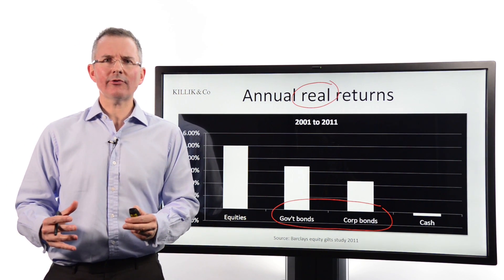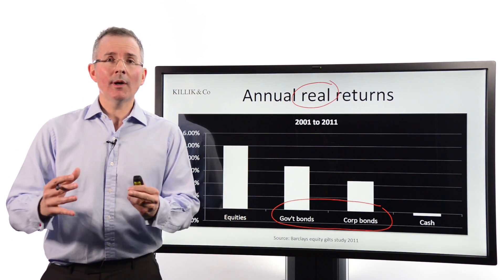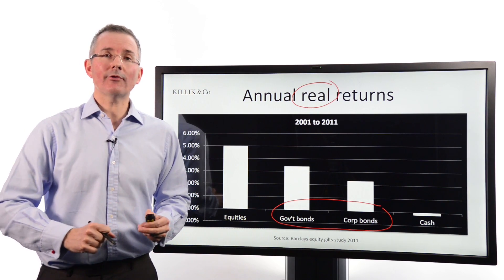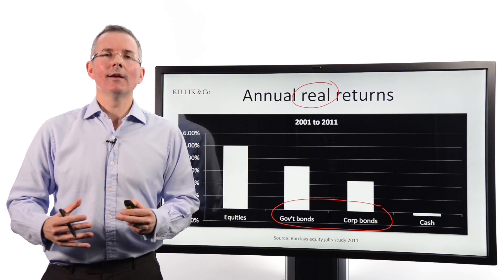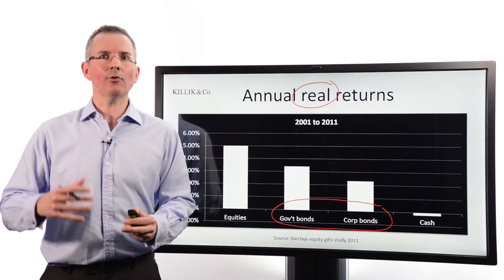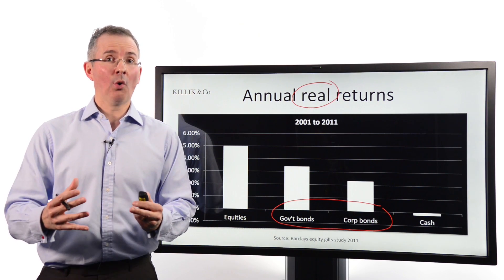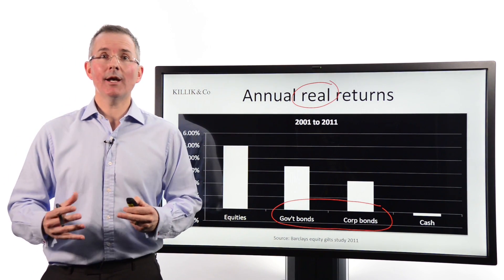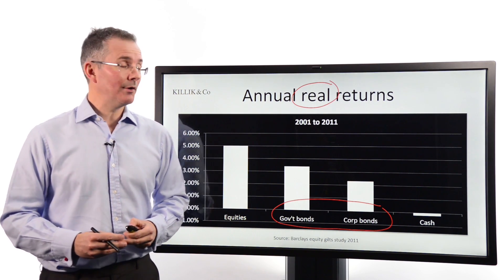One thing worth pointing out: the textbook isn't always right. Over this particular 10-year period, government bonds actually offered a better real annual return than corporate bonds — the opposite of what theory predicts. That's because governments intervened via central banks in their own bond markets, buying up bonds and doing things called quantitative easing, which distorted the market for government bonds. So that 10-year period was a little unusual — don't expect that picture to continue indefinitely going forward.